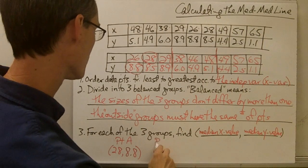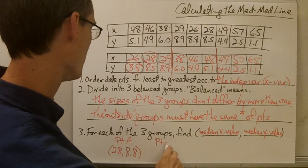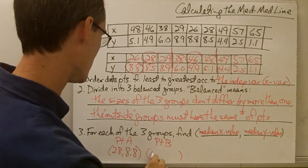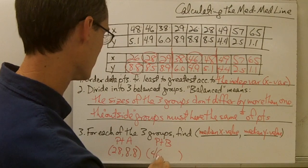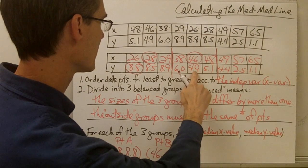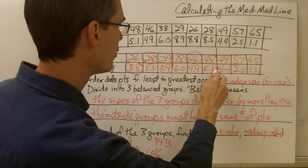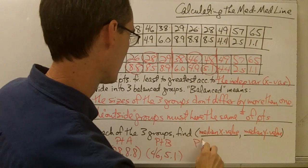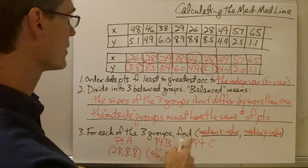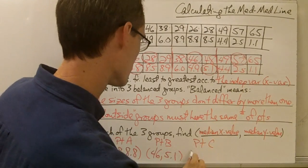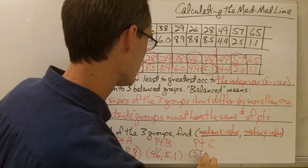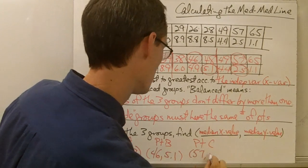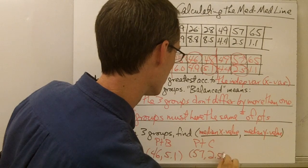For my second group, we'll call this summary point B. My median x value is the middle value, which is 46. My y values are 4.9, 5.1, 6.0, so 5.1 is going to be my median y value. And for my third summary point C, my median x value is going to be 57, and my y values 1.1 and 2.5 give a median y value of 2.5.